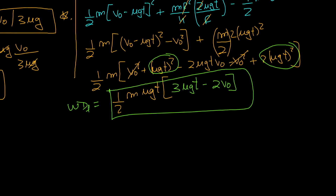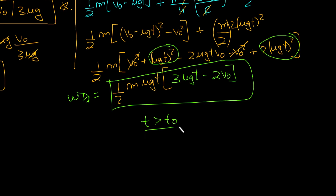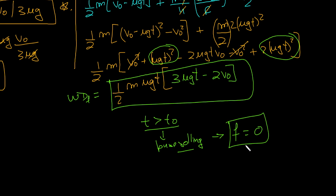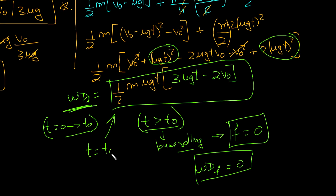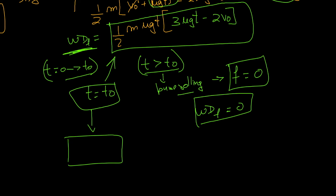Now, for T greater than t naught, only pure rolling occurs. In pure rolling, there is no slipping, so the friction force is zero. Therefore, after t naught, the work done by friction is also zero. So the total work done by friction is only from t = 0 to t = t naught. To find it, simply substitute t = t naught into our expression W = (1/2)m·μgt·(3μgt - 2v₀), and that gives the total work done by friction.